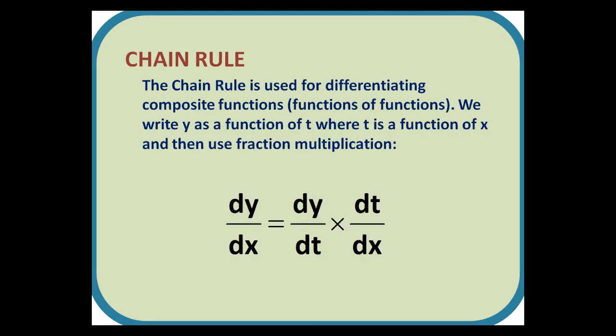Chain rule. The chain rule is used for differentiating composite functions. We write y as a function of t, where t is a function of x, and then use fraction multiplication, i.e. dy by dx equals dy by dt times dt by dx.